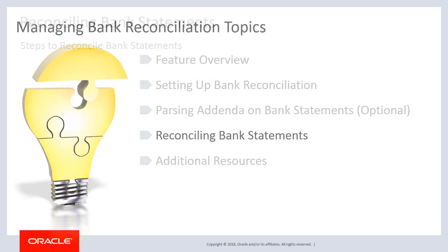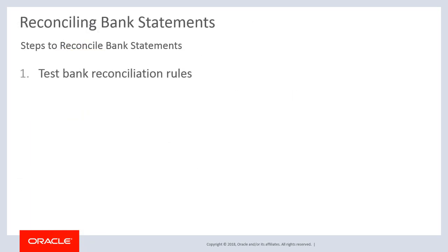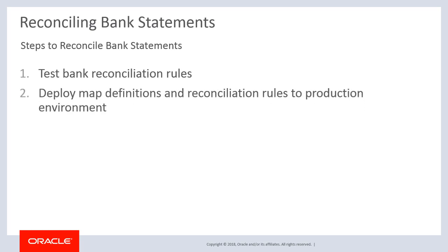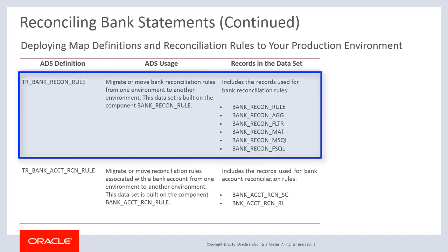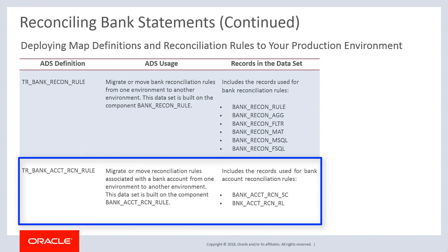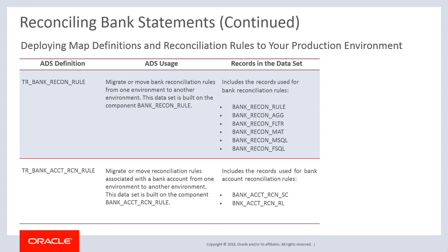To reconcile bank statements, test bank reconciliation rules, then deploy your map definitions and reconciliation rules to a production environment, and run the bank reconciliation process. PeopleSoft recommends configuring and validating reconciliation rules in a test database first. You can then use application data set definitions to migrate bank reconciliation rules to production. PeopleSoft delivers two definitions: TR bank recon rule for bank reconciliation rules, and TR bank account recon rule for bank reconciliation rules associated with bank accounts. Note that PeopleSoft provides application data set definitions to migrate map definitions in Image 19; if on Image 18 or prior, use data mover scripts to move map IDs into production.